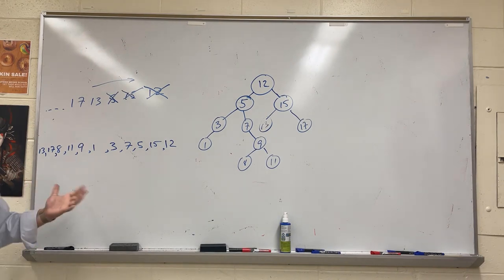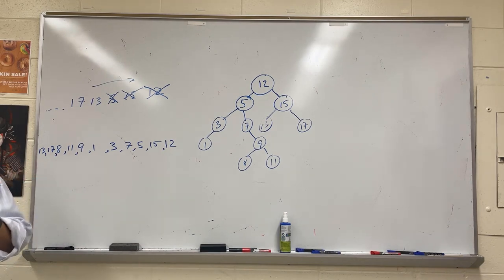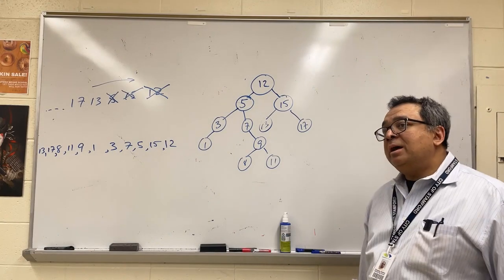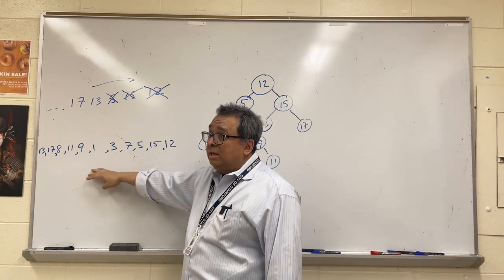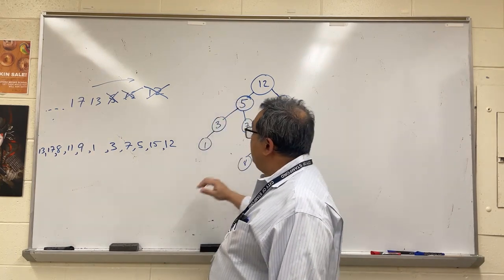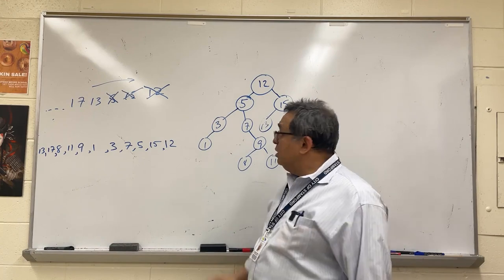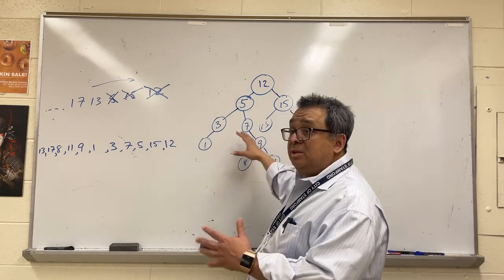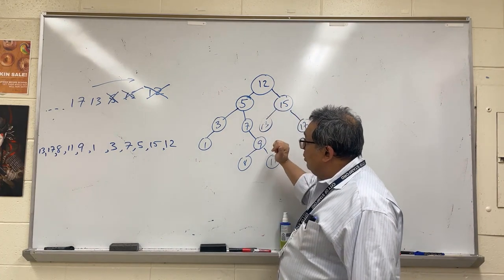Looking at this tree, the first thing you notice is it's not a linear structure. How long will it take to find, insert, or delete? That's the whole game of a database. Finding a number takes O(log n), assuming the tree is reasonably balanced. We could be unlucky and have entered numbers in an order where the worst case degrades to a linked list. Later we'll show how to keep the tree perfectly balanced, but today we'll use dumb luck.